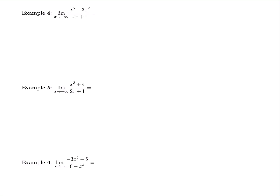So we want to figure out, first of all, what case do we have? We're comparing the degree of the top to the degree of the bottom. What's the degree of the numerator? We have x to the fifth minus 3x squared. The degree means the highest power of x, which is 5 in the top, and in the bottom it's 4.